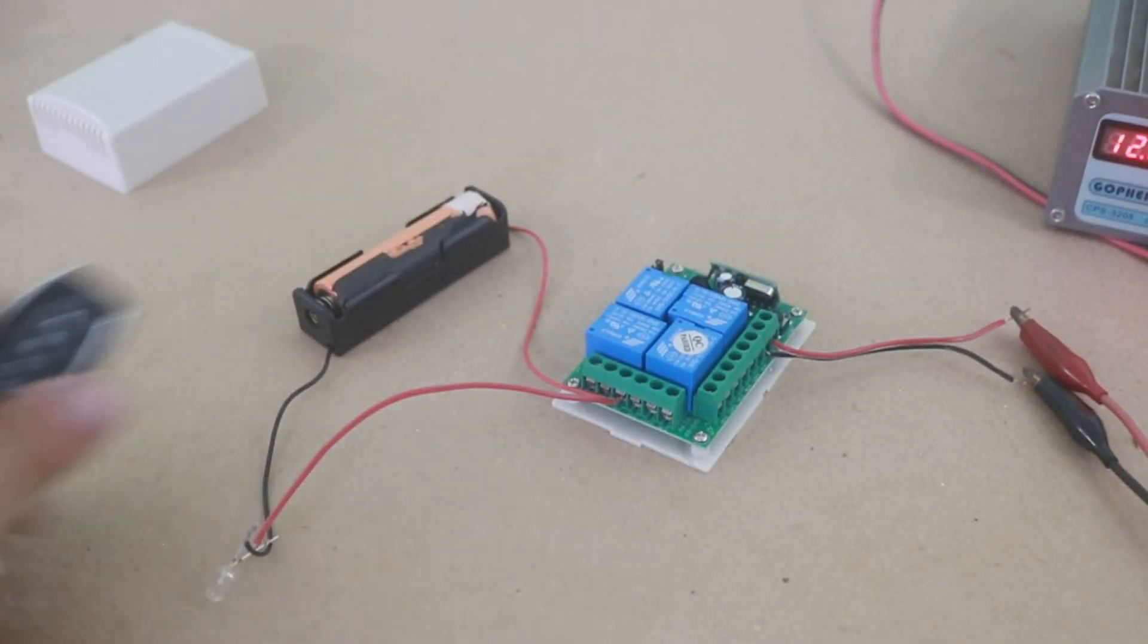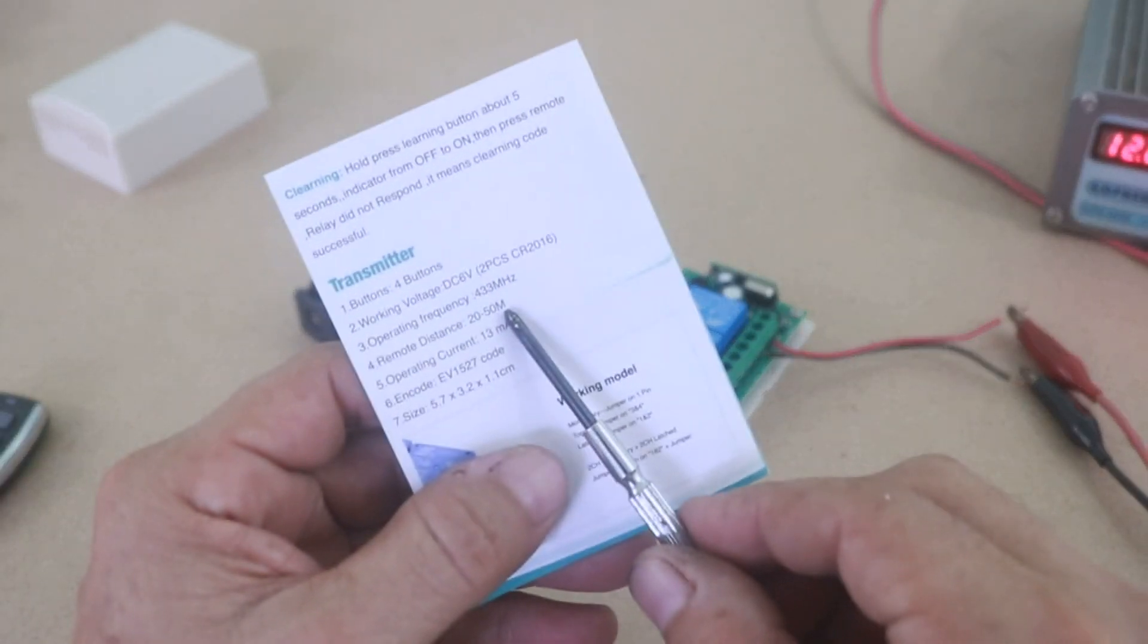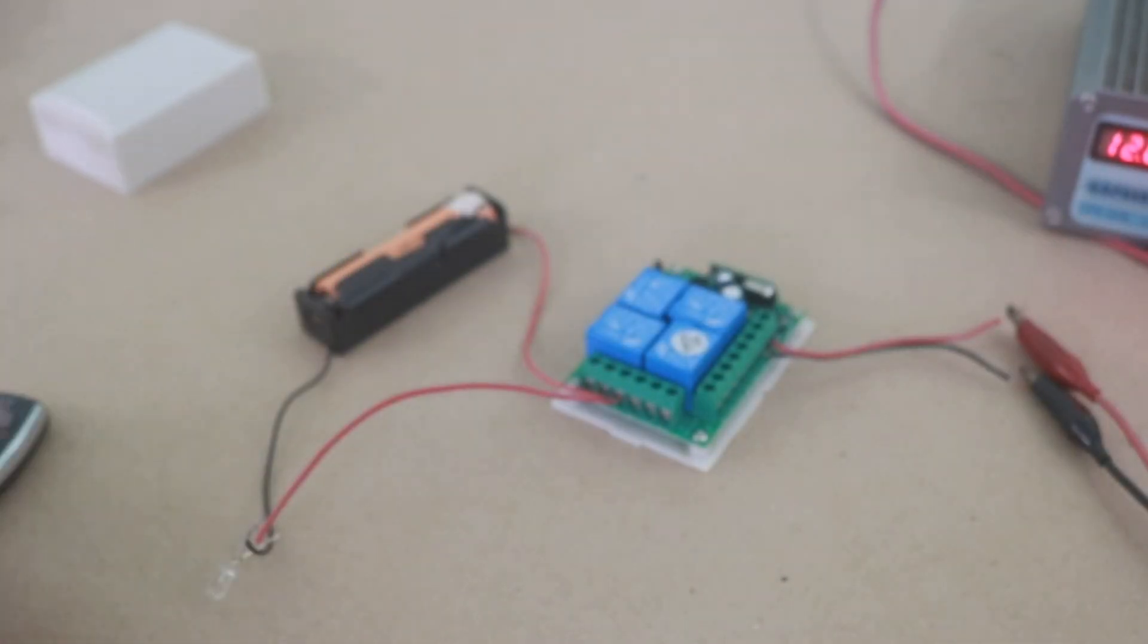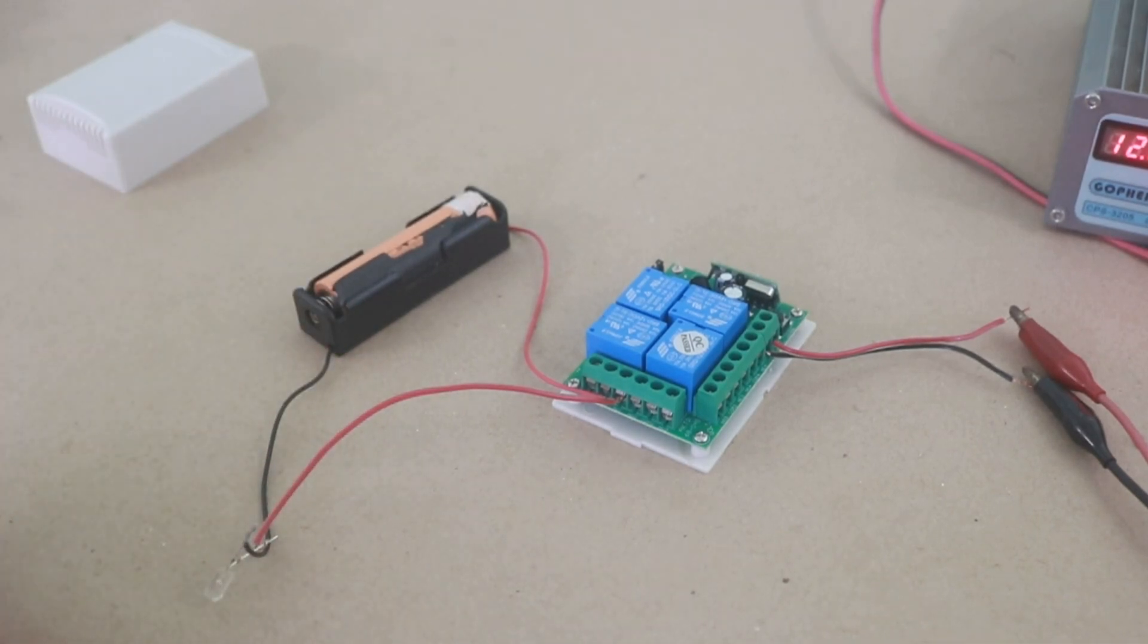As for the distance that you can use the key, here in the manual it says that is from 20 to 50 meters. I tested from one side to the other in my house, which is around 25 meters, and it works without problems. I think this is a good distance for most applications that you can think of at home.